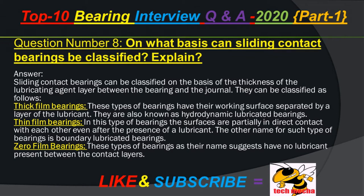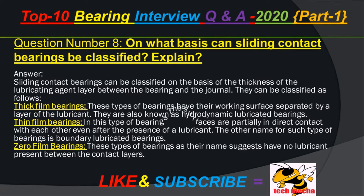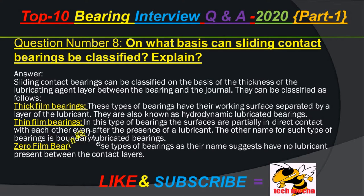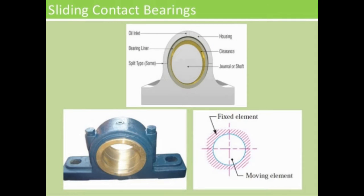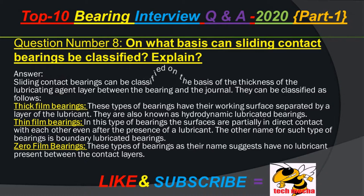Question number 8: On what basis can sliding contact bearings be classified? Explain. Answer: Sliding contact bearings can be classified on the basis of the thickness of the lubricating agent layer between the bearing and the journal. They can be classified as follows: Thick film bearings — these have their working surfaces separated by a layer of lubricant, also known as hydrodynamic lubricated bearings. Thin film bearings — in this type, surfaces are partially in direct contact even after the presence of a lubricant, also known as boundary lubricated bearings.